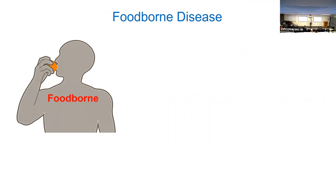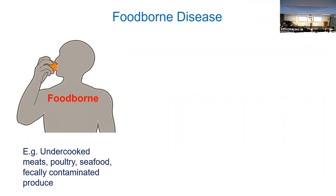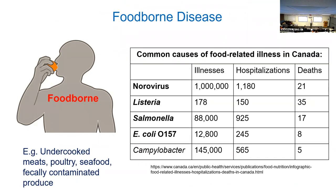Moving on to foodborne disease: foodborne disease is usually fecal matter — human or animal — contaminating food. Looking at the chart of the most common causes in Canada, E. coli O157 is on the list. It's worth talking about Salmonella, Listeria, and Norovirus. Listeria grows really well in fridges, which is why it causes issues. Although there aren't a lot of cases across the country, they can be quite severe — especially if you're immunocompromised, a child, or elderly. The number one cause is Norovirus.